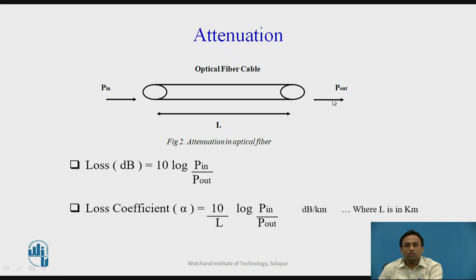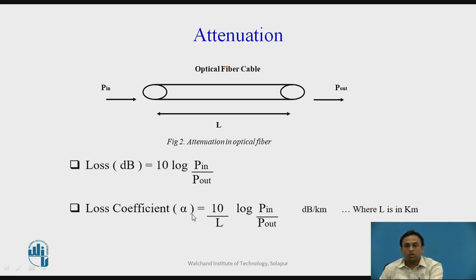The loss of the link through length L in dB is 10 times log base 10 of P_in over P_out. It is often convenient to represent loss in terms of the loss coefficient, which is the loss in dB per kilometer length of fiber. Dividing by length L gives the loss coefficient alpha in dB per kilometer, where L is in kilometers.